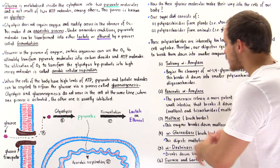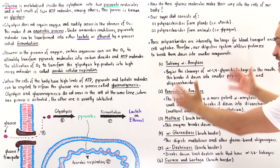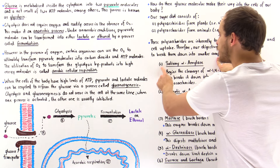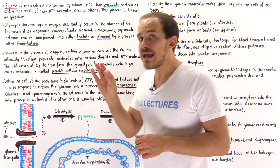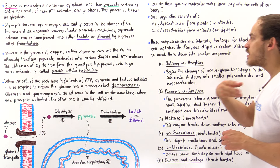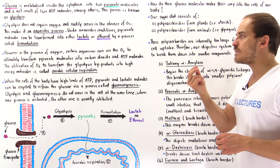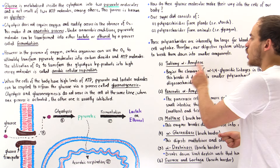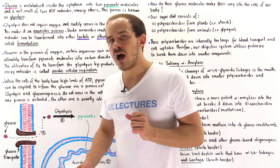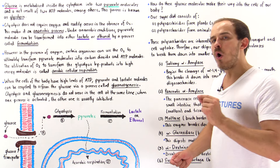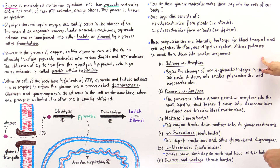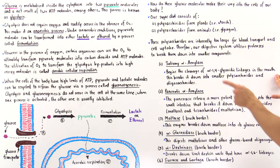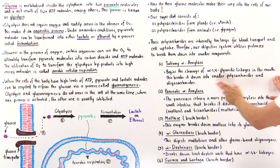The question is: what are these digestive enzymes that break down carbohydrates into their individual monomeric form? We have many different types of enzymes — seven enzymes listed. Let's begin with salivary alpha-amylase. Salivary simply means it exists in saliva. When we eat and chew food, the saliva contains this digestive enzyme known as alpha-amylase, which begins to cleave alpha-1,4 glycosidic linkages in starch as well as glycogen, breaking them down into smaller polysaccharides and oligosaccharides.